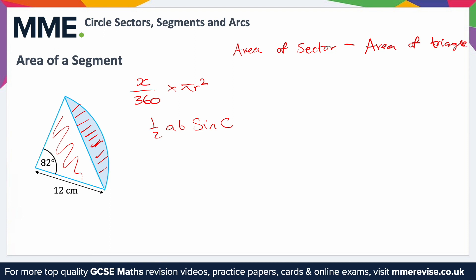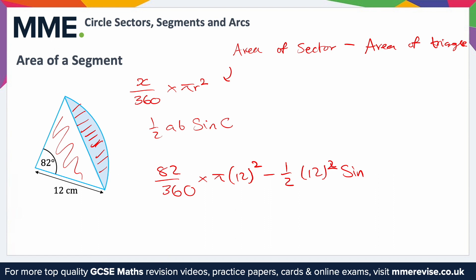Substituting values in: the area of the sector is 82 over 360, times π, times 12 squared. Then we take away the area of the triangle, which is a half times a times b — and since both a and b are the radius, that's just 12 squared — times sin(C), where C is the angle, so sin(82).